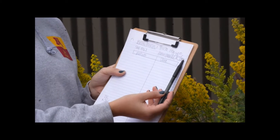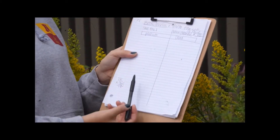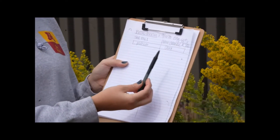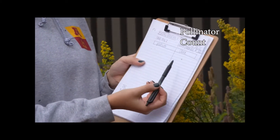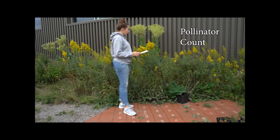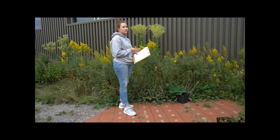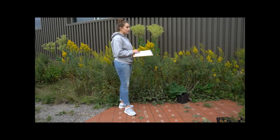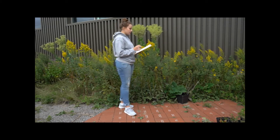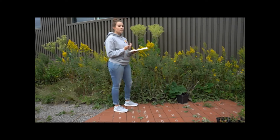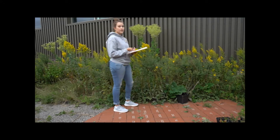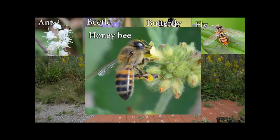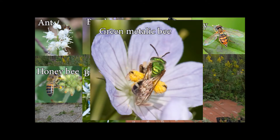Once we have that basic information, we will make two columns. One column is for the type of pollinator that we see, and the other is for the count or tally marks of how many of that type we see. Before we begin our observation, we want to review the types of pollinators we could be seeing. We have a video on basic pollinator identification linked in the description. The possible pollinators include ant, beetle, butterfly, fly, honeybee, bumblebee, green metallic sweat bee, other bee, and unknown.